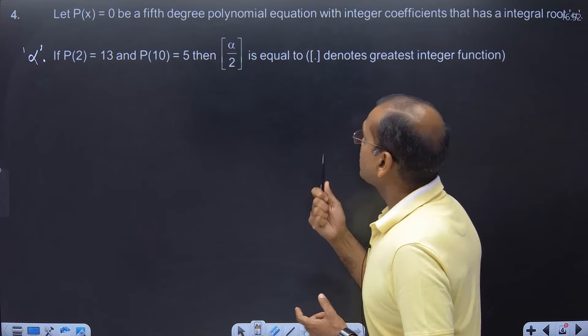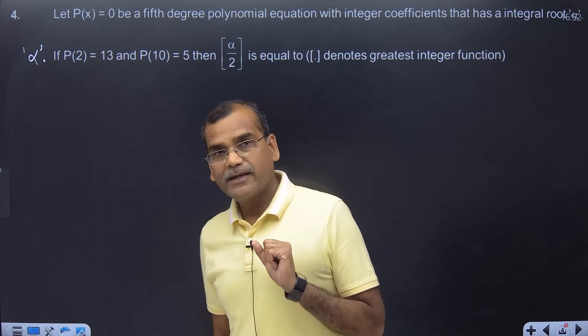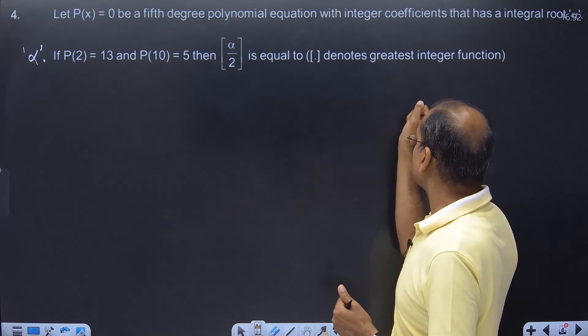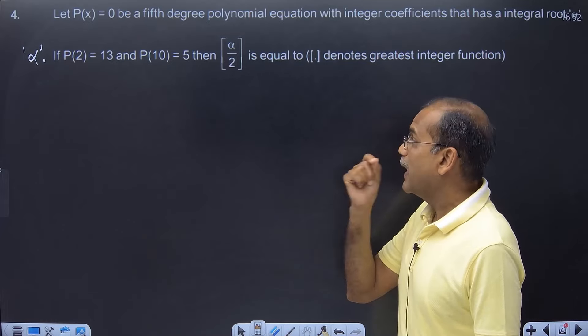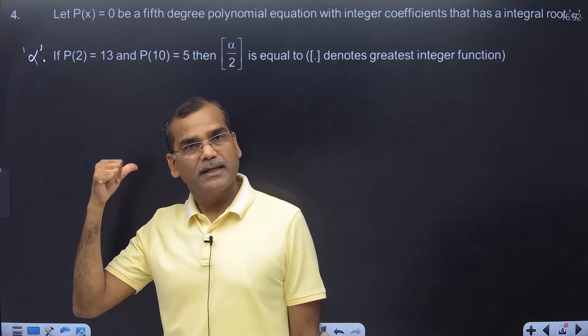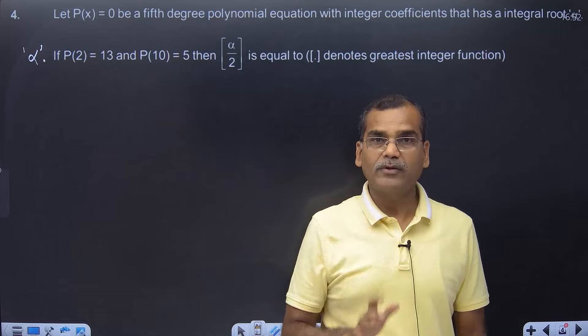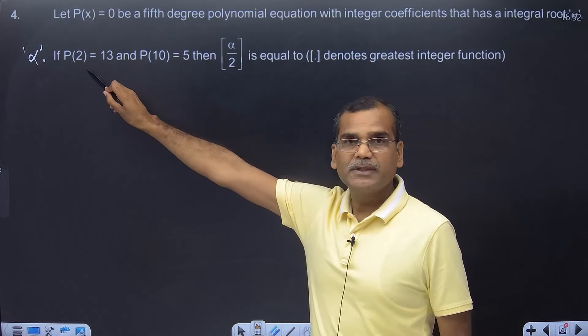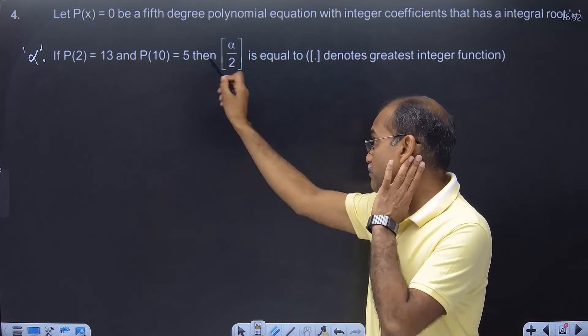You are given P(x), a polynomial of 5th degree, with all coefficients as integers, and alpha, which is an integer, is the root of P(x). Also given the information P(2) equals 13, P(10) equals 5.